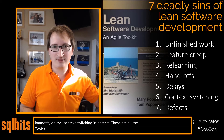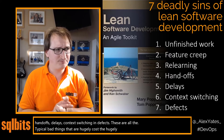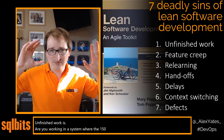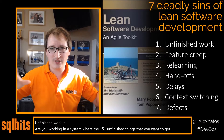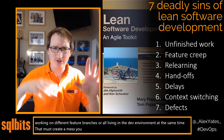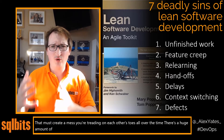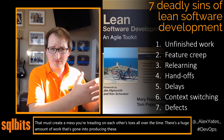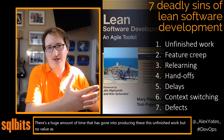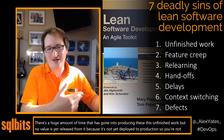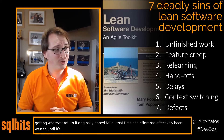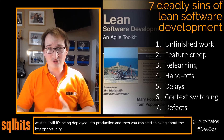These are all the typical bad things that are hugely painful. Unfinished work: are you working in a system where there are 151 unfinished things, all on different feature branches or all living in the dev environment at the same time? That creates a mess — you're treading on each other's toes. There's a huge amount of time gone into producing this unfinished work, but no value is yet released because it's not deployed to production. All of that time and effort has effectively been wasted until deployed, and then you can start thinking about the lost opportunity cost on top of that.